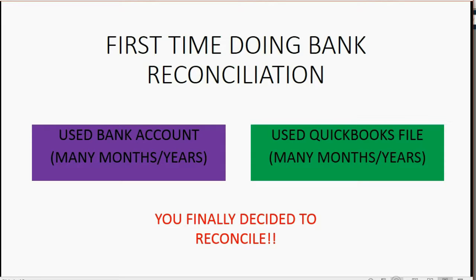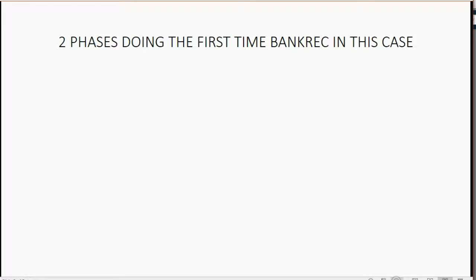You can't go all the way back to the beginning and reconcile forward — that would take years. And even if you found mistakes from many months ago, you would not be able to rectify them because the mistakes would be too old. So what do you do? There are two phases for doing the first-time bank rec in a situation like this.